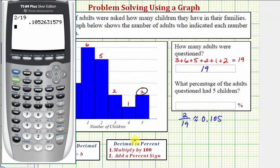And now to convert to a percentage, we multiply by one hundred and add a percent sign, which is equivalent to moving the decimal point to the right two places and adding a percent sign. So notice how either way, we get a percent which would be approximately ten point five percent.